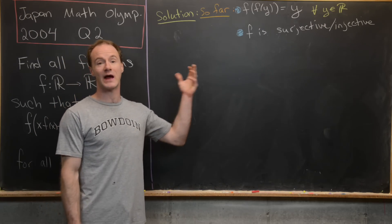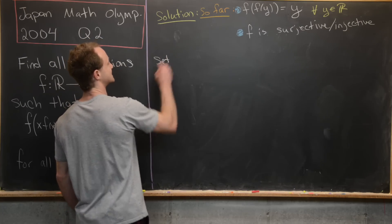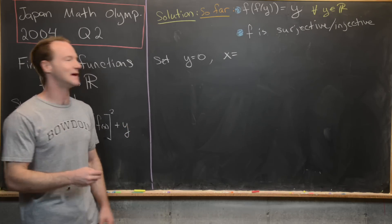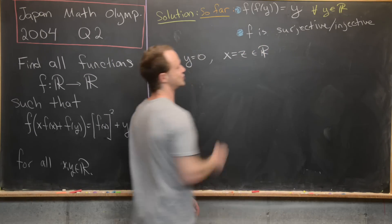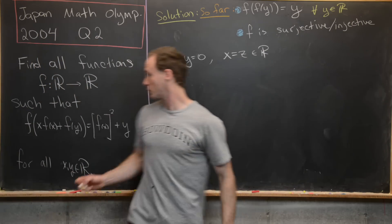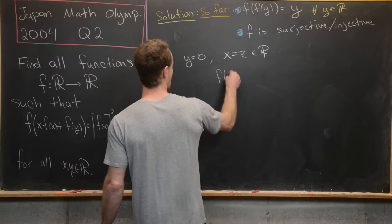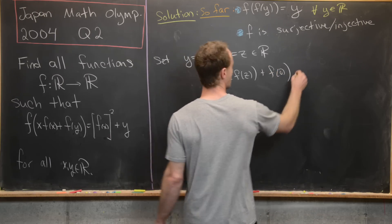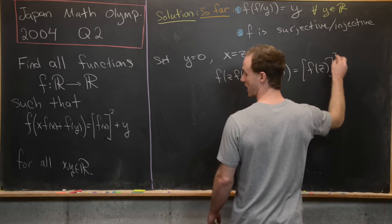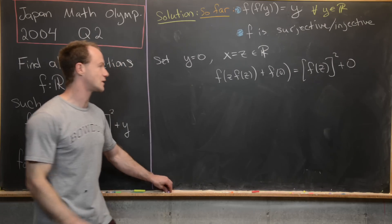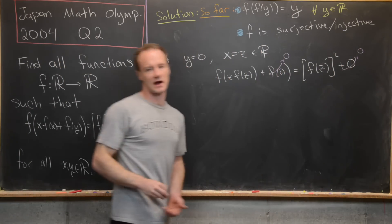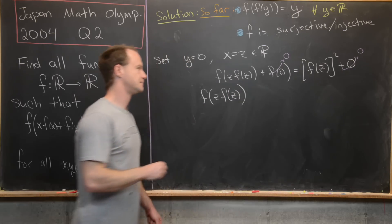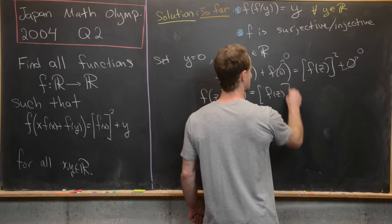Setting y = 0 and x = z (a free variable) in the functional equation gives f(z·f(z) + f(0)) = f(z)² + 0. Since f(0) = 0, this simplifies to f(z·f(z)) = f(z)². That's a nice new equation to work with.